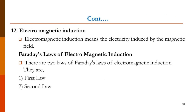Electromagnetic induction means electricity induced by the magnetic field. The phenomenon by which EMF is obtained from flux is called electromagnetic induction. EMF can be induced in a coil by moving the coil in a fixed magnetic field, or keeping the coil fixed in a moving magnetic field, by creating relative motion between flux and coil. If there is a change of flux lines with respect to the conductor — that is, cutting of flux lines by the conductor — then EMF gets induced in that conductor. This phenomenon is called electromagnetic induction.